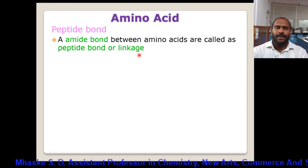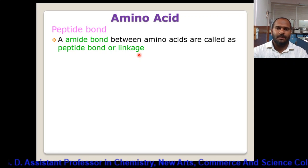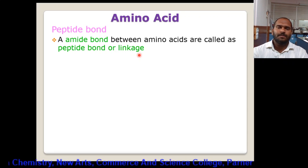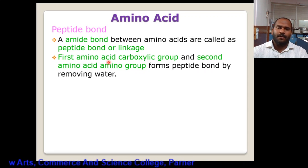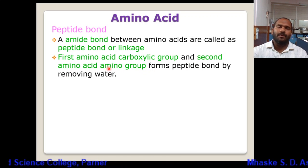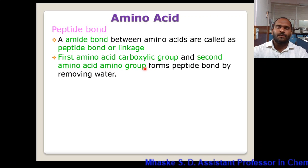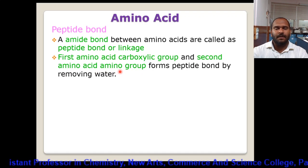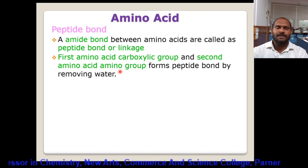The amide bond between amino acids is called a peptide bond or peptide linkage. Amide bond means there is a nitrogen attached with a carbonyl group. That bond is called an amide bond. This bond is formed when the first amino acid's carboxylic group and the second amino acid's amino group combine together, forming an amide bond with the removal of water.